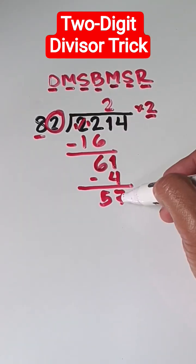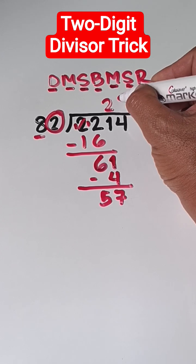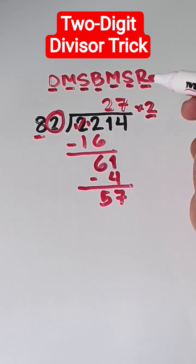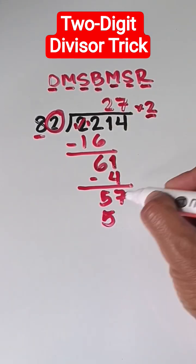We start with division again. 57 divided by 8, that is 7. So, we write 7 on top of 4. And then, multiply. 7 times 8 is 56.